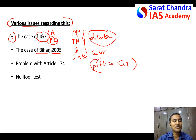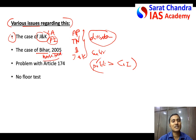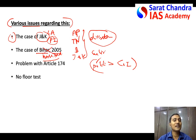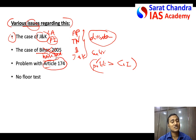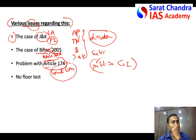In Bihar in 2005, the Governor dissolved the assembly citing the reason that he was expecting horse trading — the moving of MLAs from one political party to another. He expected this and dissolved the assembly. However, the Supreme Court clearly mentioned that such dissolving is illegal and not accepted. One of the main issues is that Article 174 does not clearly mention the conditions under which the Governor can dissolve the legislative assembly.